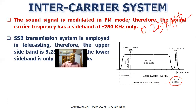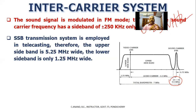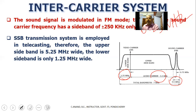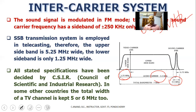In a single sideband system, the video carrier is at 5.25 MHz from the upper sideband, giving a distance of 5.5 MHz to the sound carrier. The lower sideband is 1.25 MHz and the upper sideband is 5.25 MHz for the video carrier. The sound carrier has sidebands of 0.25 MHz (250 KHz). All these standards have been decided by CSIR — the Council of Scientific and Industrial Research of the Indian government.